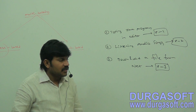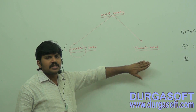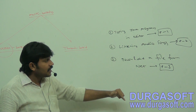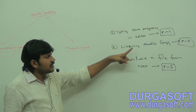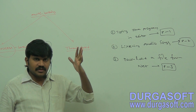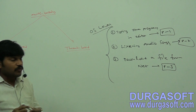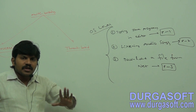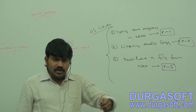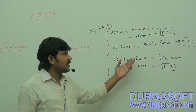So, process-based multitasking means executing several tasks simultaneously where each task is a separate independent process. The best example is: while typing a Java program in the editor, we can listen to MP3 audio songs and download a file from the internet. However, process-based multitasking is an OS-level concept, not highlighted at the programmer level.